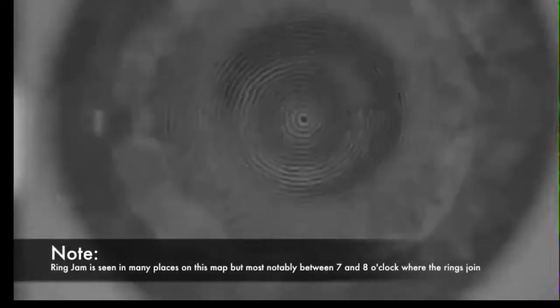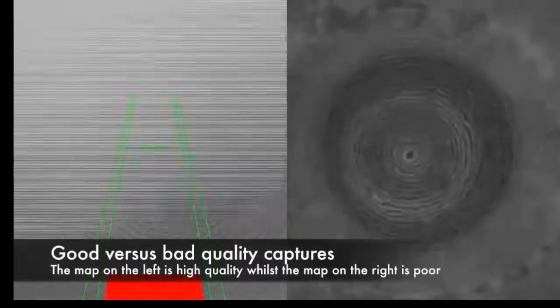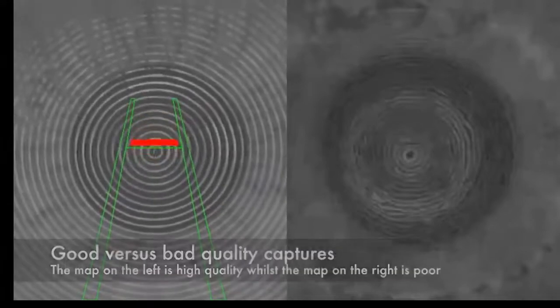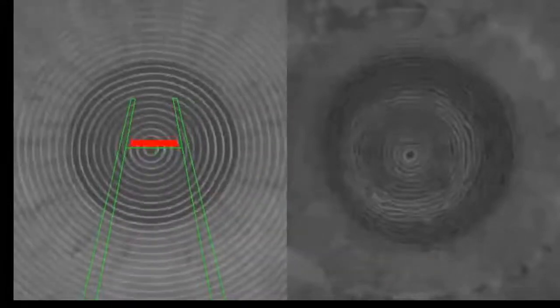However, in the second example, we see the mires are not intact, and the Placido disc image shows ring jam. Both of these captures showed an accuracy in the top right hand corner of 99%, yet the former will yield better quality data.